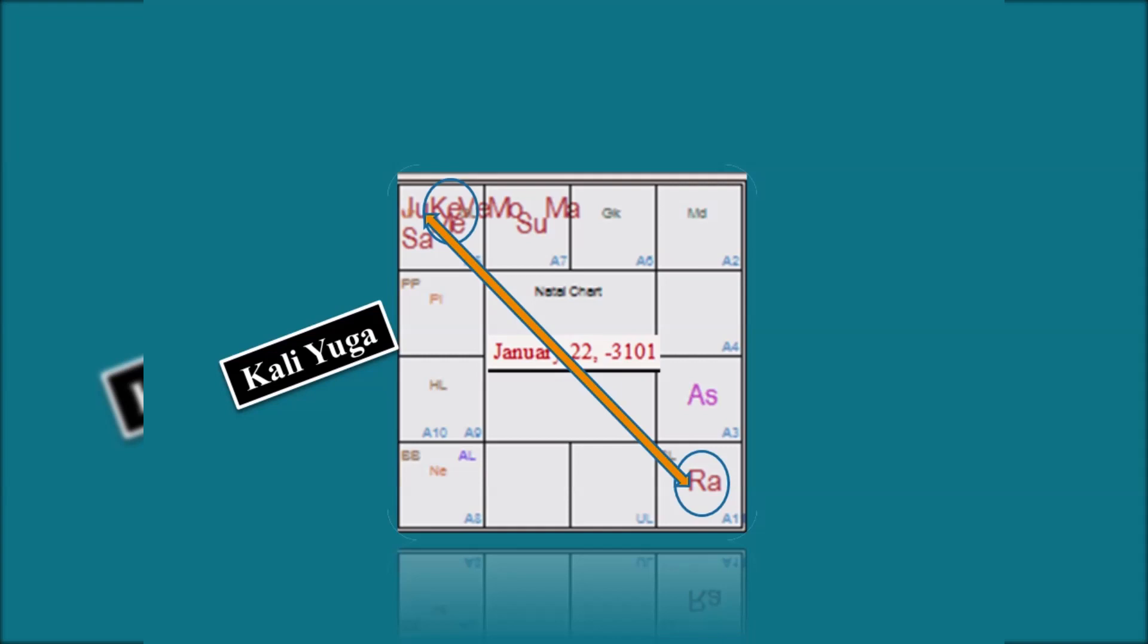And it takes 18 years for these nodes to come back to the same position. That is at the end of 18 years they come back to the same position.